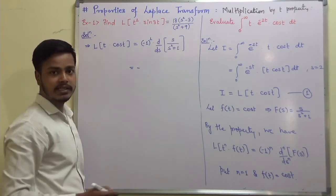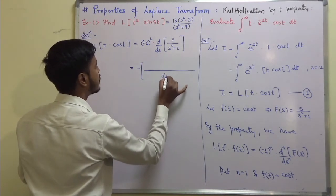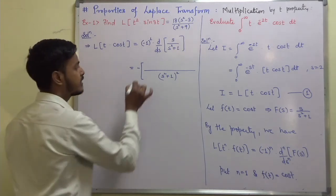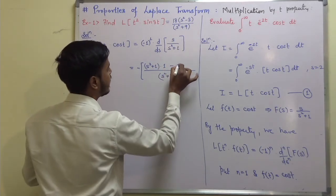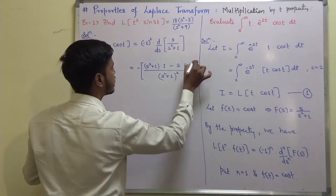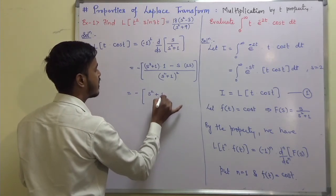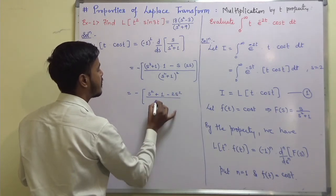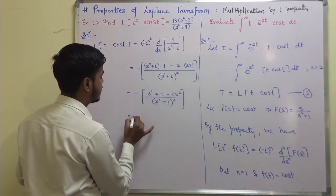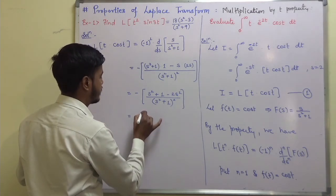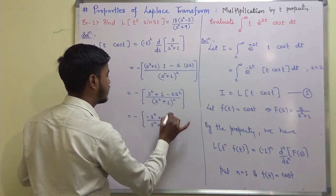Applying the quotient rule to d/ds of s/(s²+1): this is minus of (s²+1) times 1 minus s times 2s, all over (s²+1) squared. This simplifies to minus of (s²+1 minus 2s²) upon (s²+1) squared, which is minus of (1 minus s²) upon (s²+1) squared.